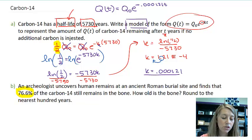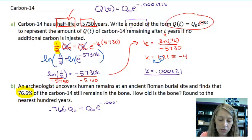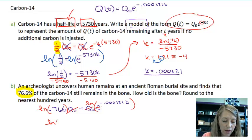So I have .766 of my initial amount left is equal to my initial amount and then the rest of my formula: e to the negative .000121t. So now I just need to solve this equation for t and that will give me time. I know that my q naught cancel out. I know that I can take natural log of both sides to get my e to cancel out. So that gives me natural log of .766 is equal to negative .000121t.